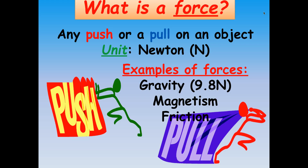Gravity is a force that acts on everything all the time. It's a pulling force that pulls us down and keeps us on the ground. The size of that force on Earth is 9.8 newtons. The force of gravity is different on different planets depending upon the mass of that planet. The larger the mass, like Jupiter, the more gravitational pull. If we went to the moon, where gravity is only a tenth of Earth's, we would weigh a lot less. So here on Earth, the force of gravity is 9.8 newtons.